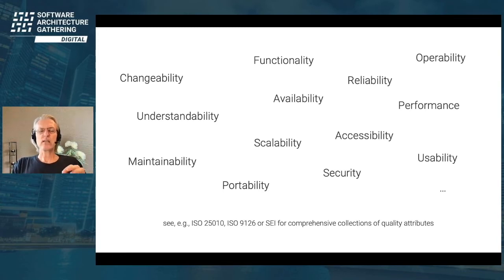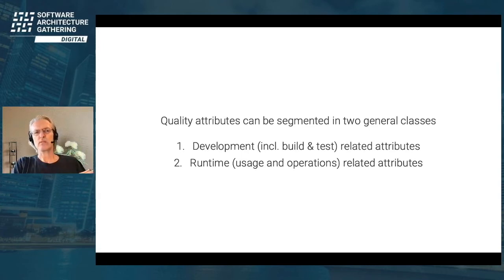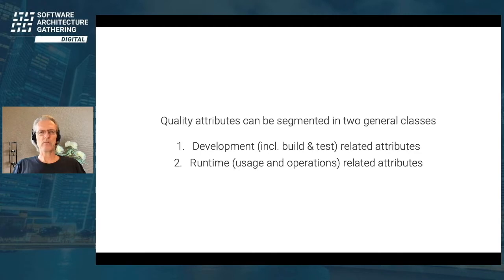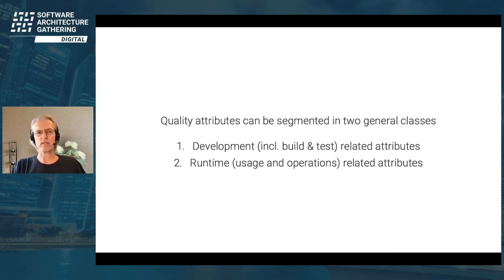If you look closely at all these quality attributes, you can segment them into two general classes: development-related attributes, and runtime-related attributes including usage and operations. Some people try to split them into three classes — development, usage, and operations — but for this presentation it's fine to say development and runtime-related attributes.